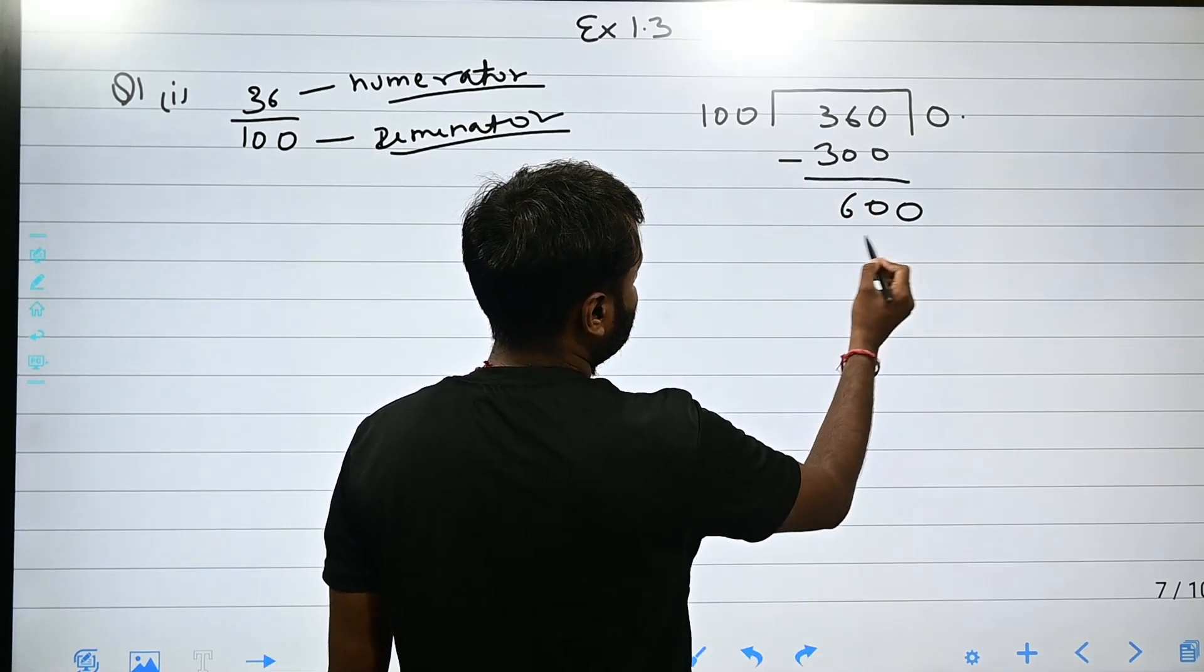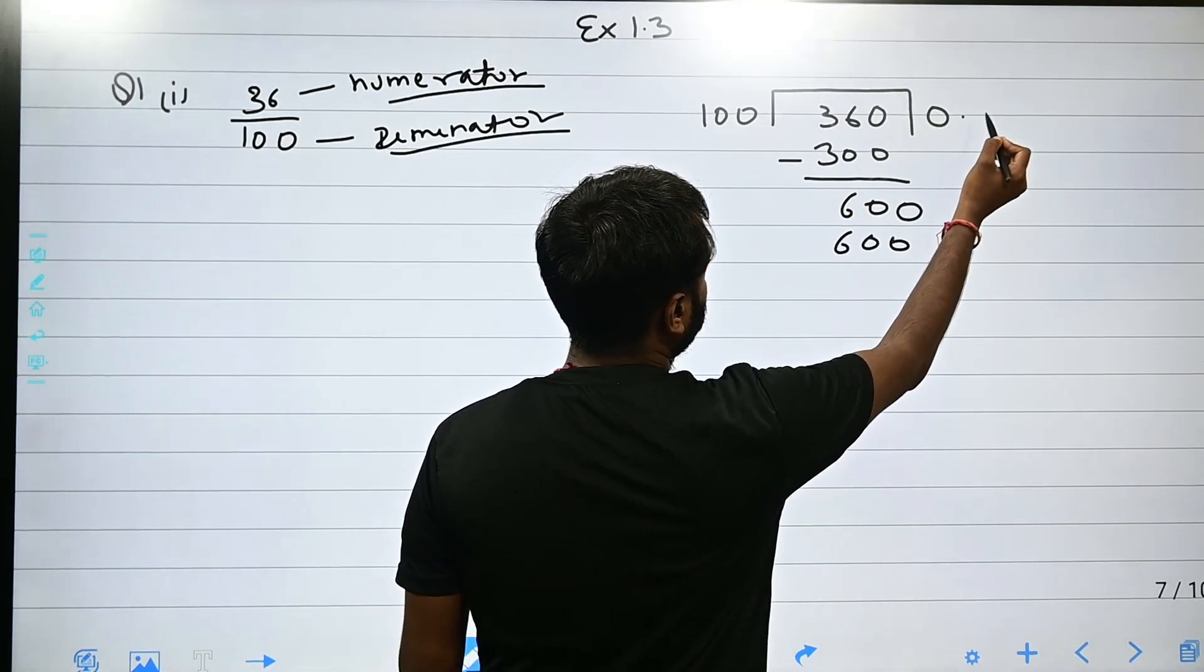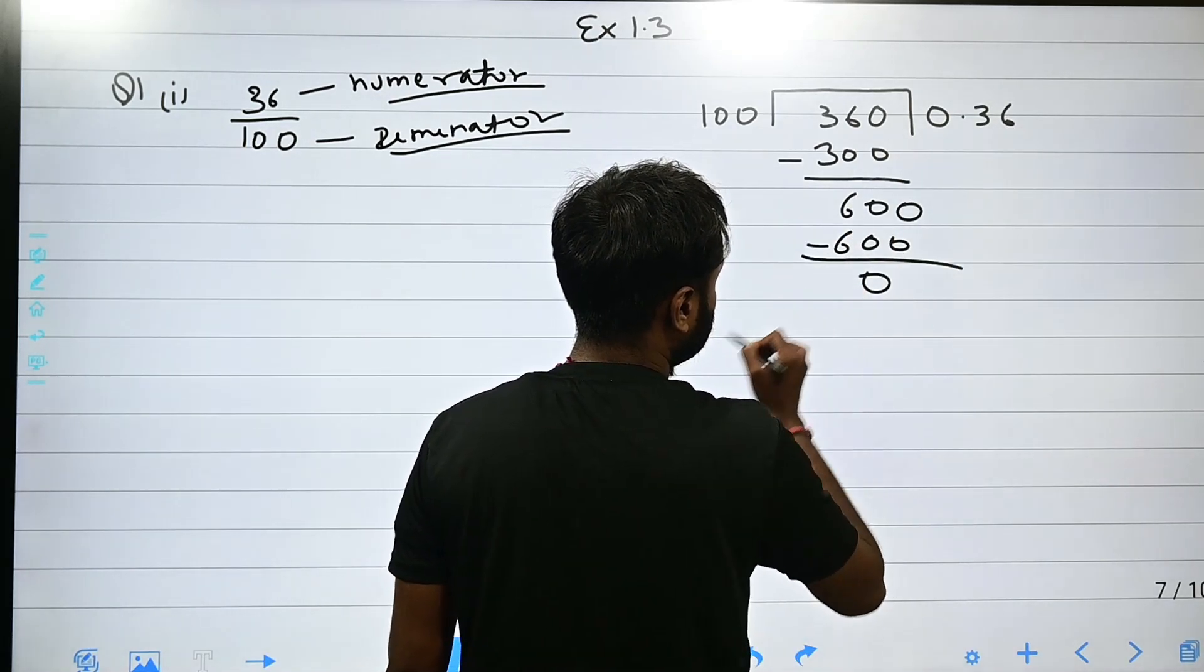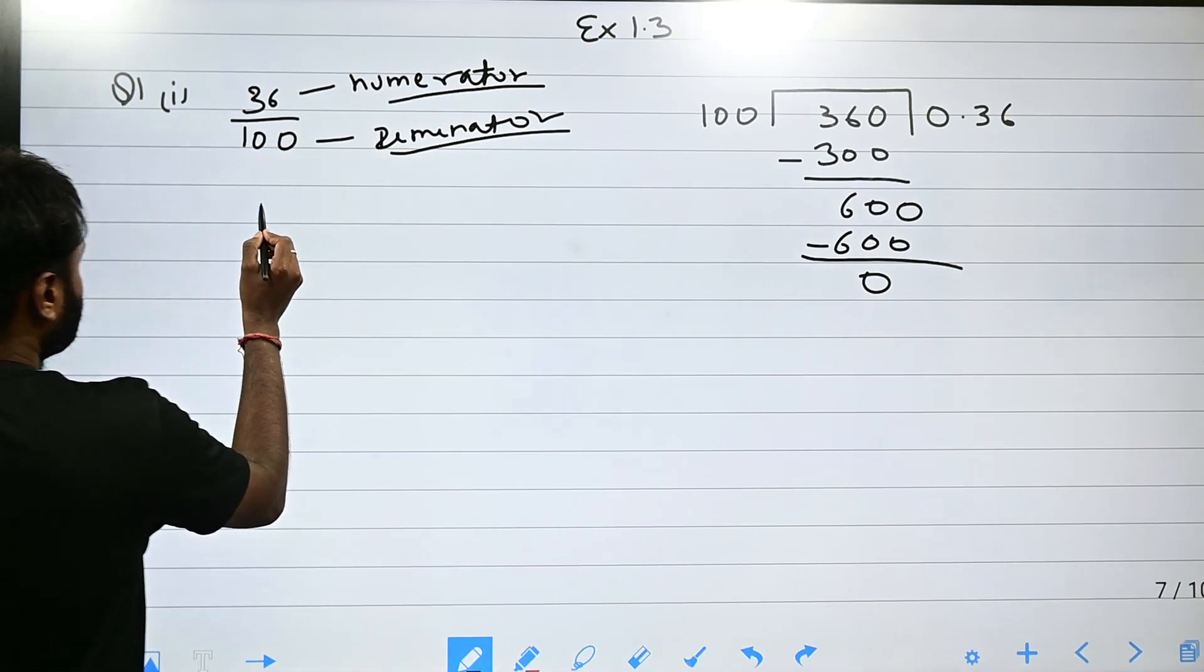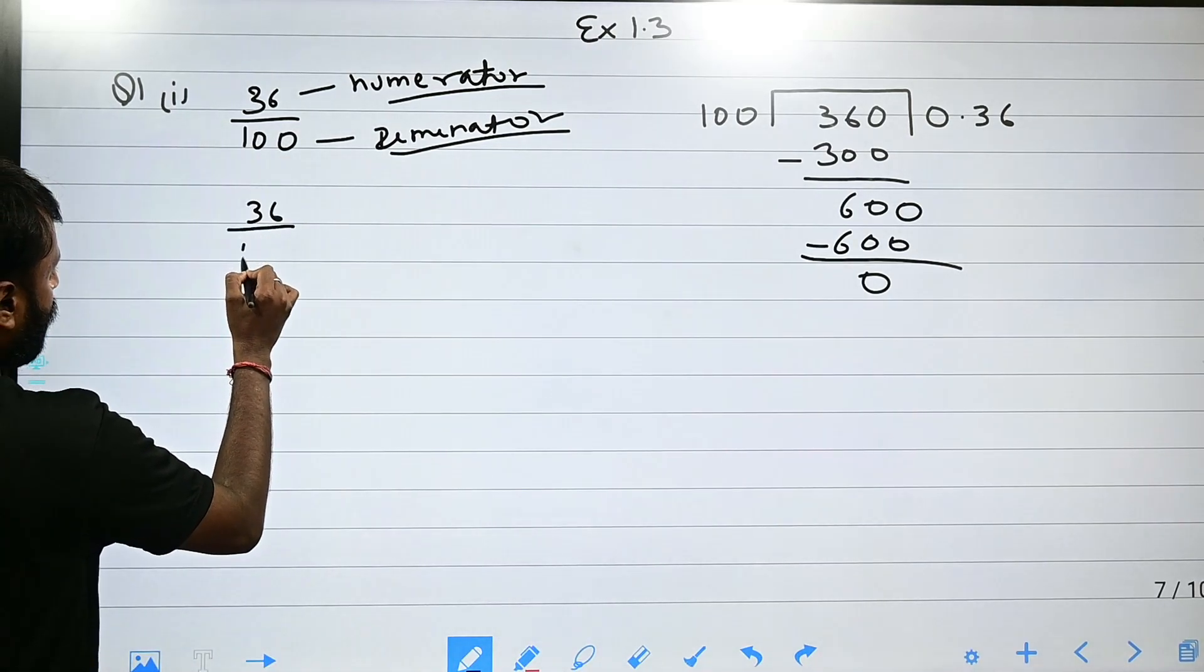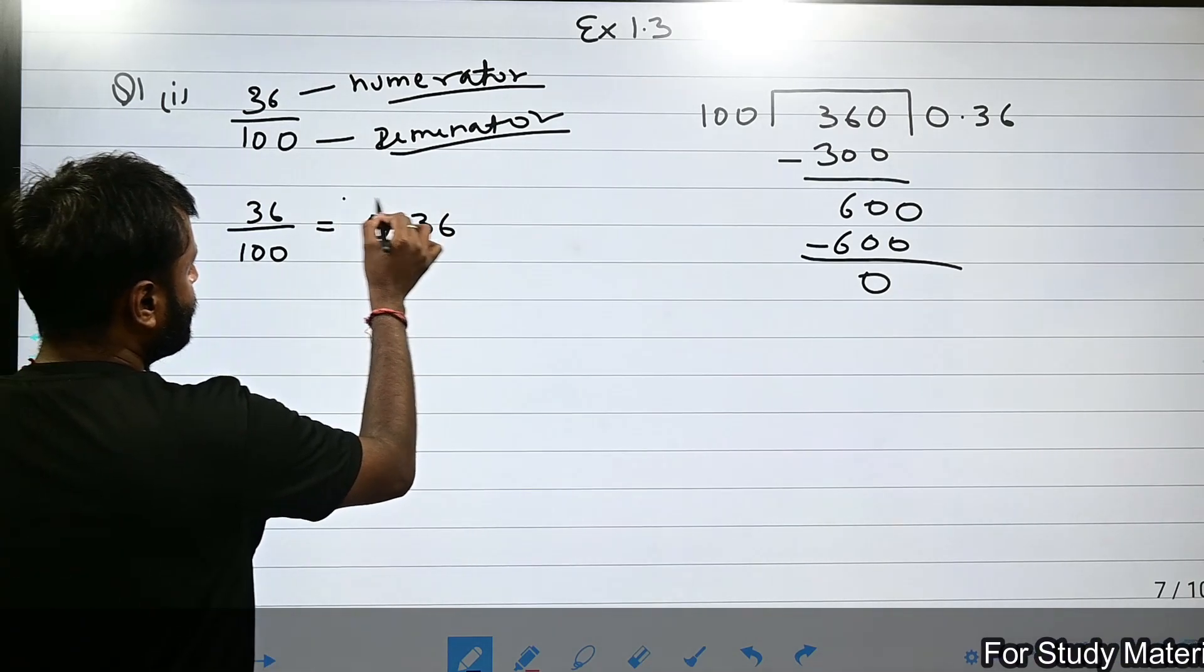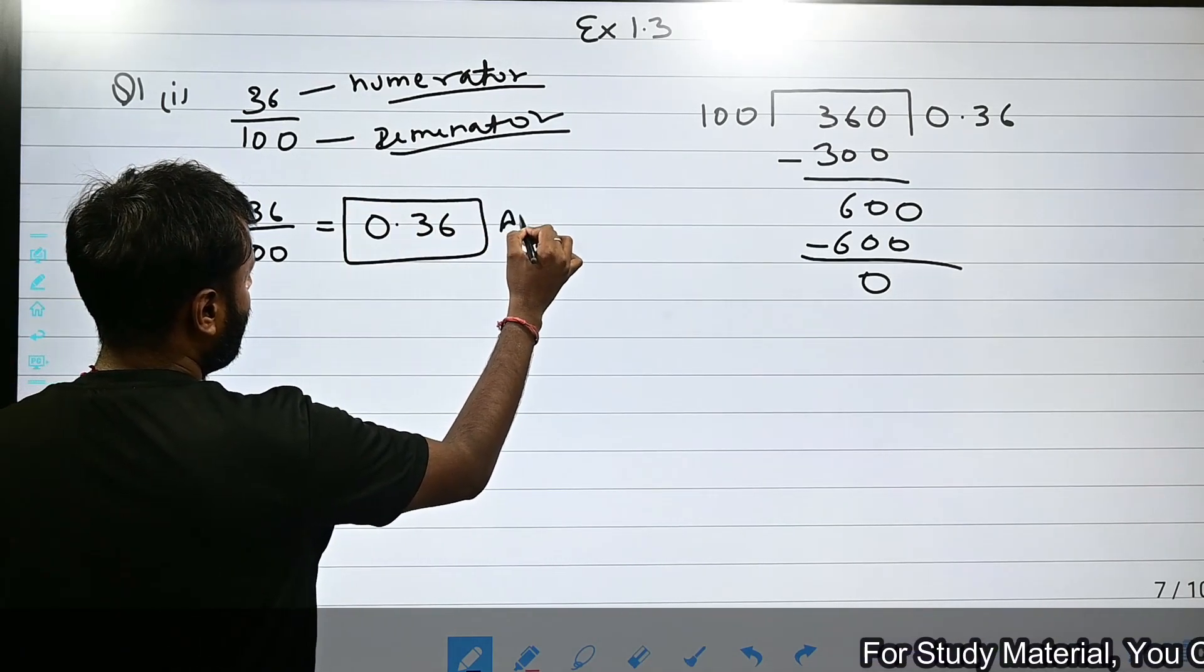60 is a small number, so we will add 0. In the table, 600 divided by 100 comes to 6, so we get 600 minus 600 equals 0. This means that 36 upon 100, the decimal expansion is 0.36. This is your answer.